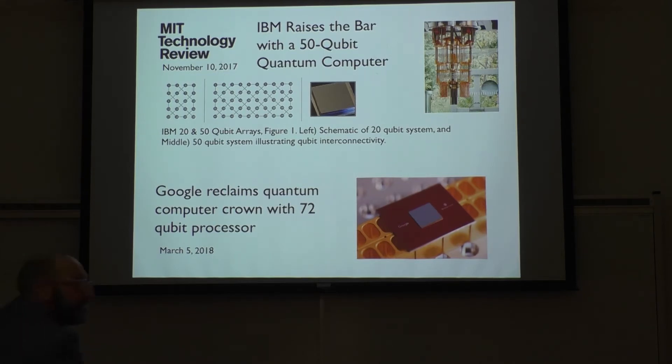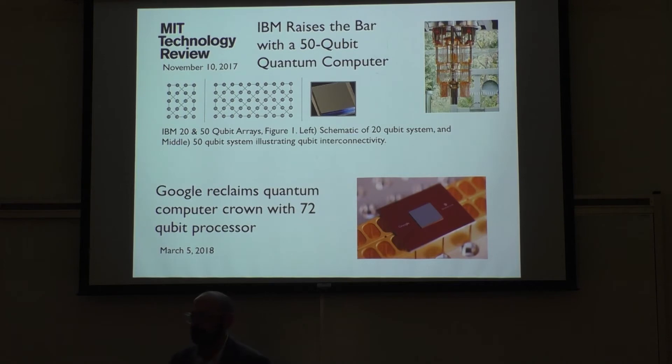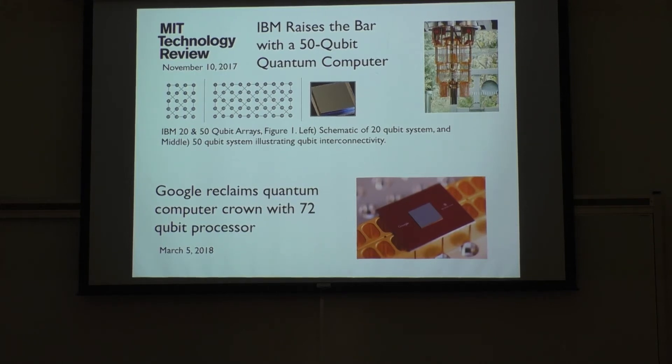And Google would have none of it. They'd have to take the crown back. Just at the March meeting, this March meeting, they announced their 72 qubit processor. So it's a very exciting time. How much are a lot of these things capable of doing as of right now? Or is it just a race of who can do something with more qubits? Good question. The answer is not a heck of a lot.